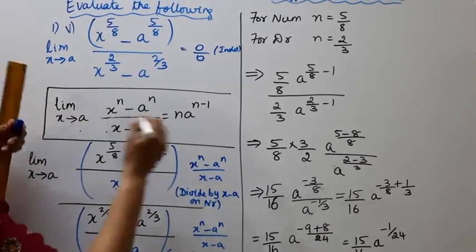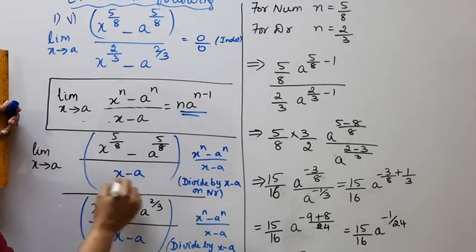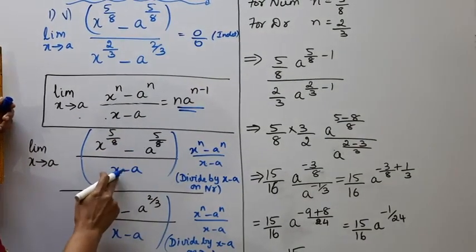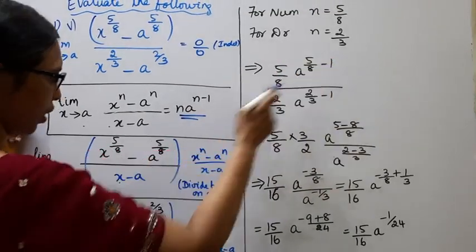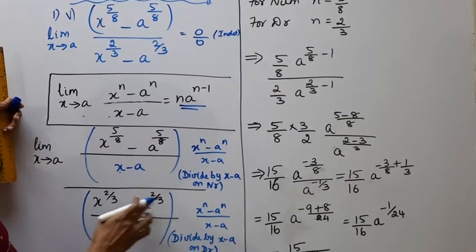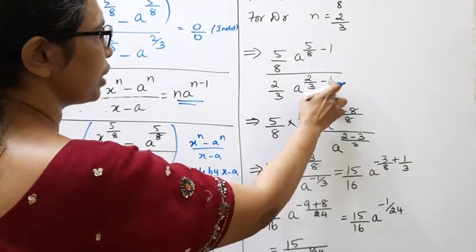So the formula is: x power n minus a power n by x minus a equals n a power n minus 1. In the denominator, x power n minus a power n by x minus a equals n a power n minus 1.